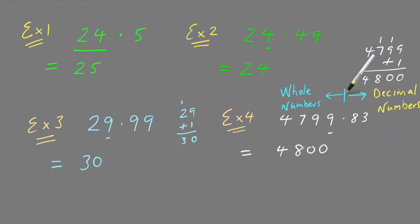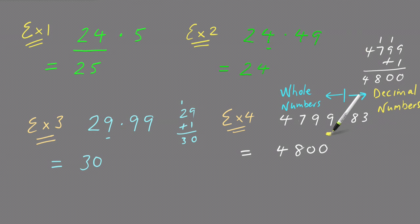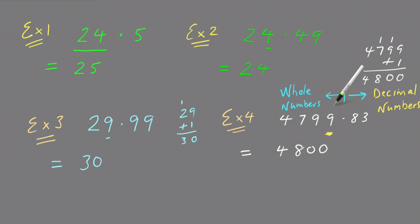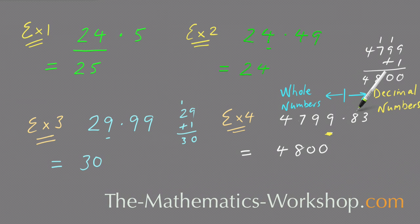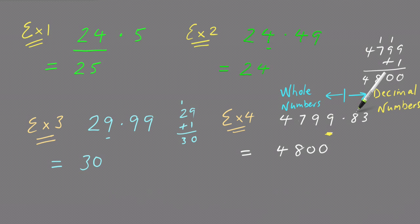Some key things to remember: whole numbers are always the numbers on the left of the decimal point, and decimal numbers are the numbers on the right. The number immediately to the left of the point is in the units column. When rounding to the nearest whole number, focus on the units column digit and look at the number to its right. If it's five or more, round up one. If it's zero, one, two, three, or four, the units digit stays the same.